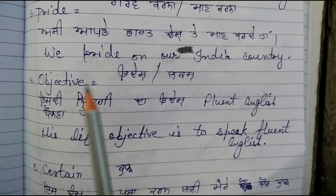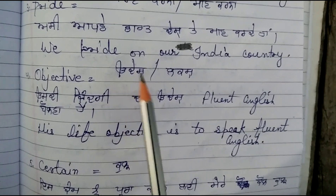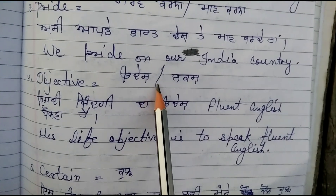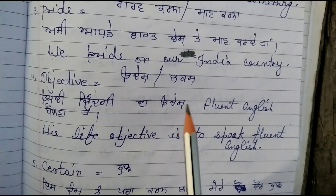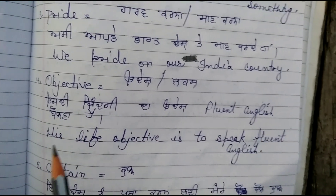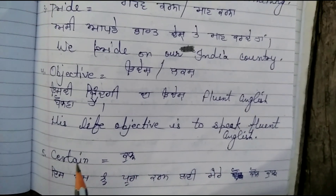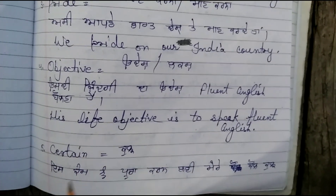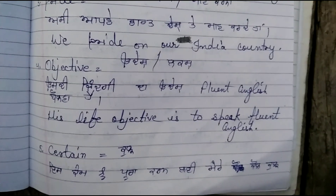The next one is 'objective' — udaysh ya laksh — means purpose or aim. For example, the purpose of life is to speak fluent English. His life objective is to speak fluent English.